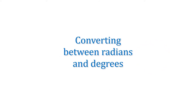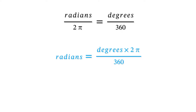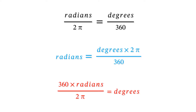Converting between radians and degrees: radians compared to 2 pi is the same as degrees compared to 360 for a circle. If we multiply both sides by 2 pi, we get radians equals degrees times 2 pi over 360, or degrees equals 360 times radians over 2 pi. The bottom two equations cancel down by two — it's worth remembering this, but that's how you work them out from the top.